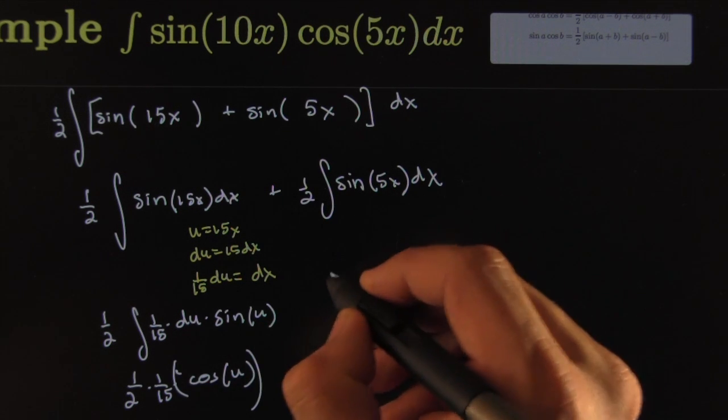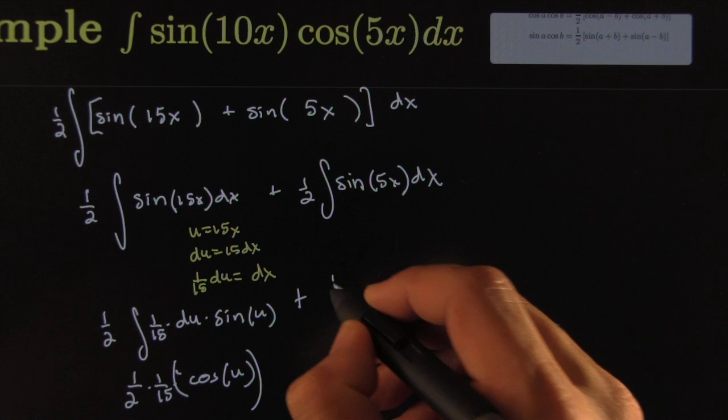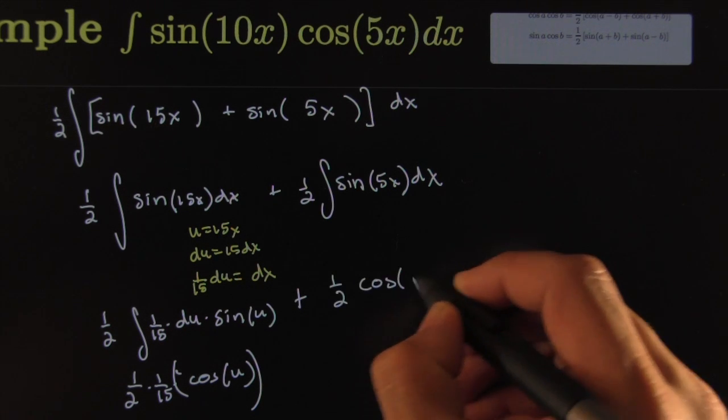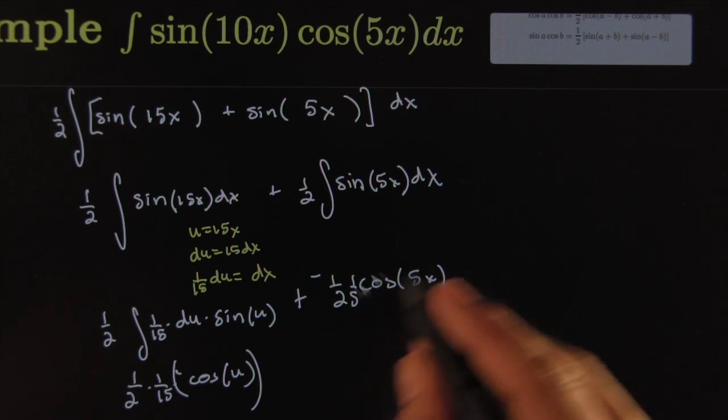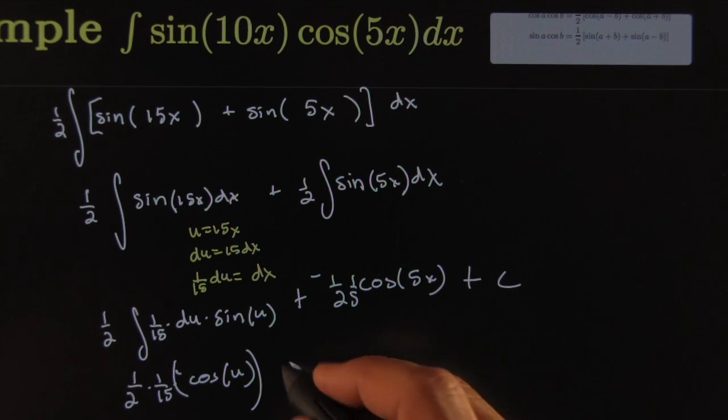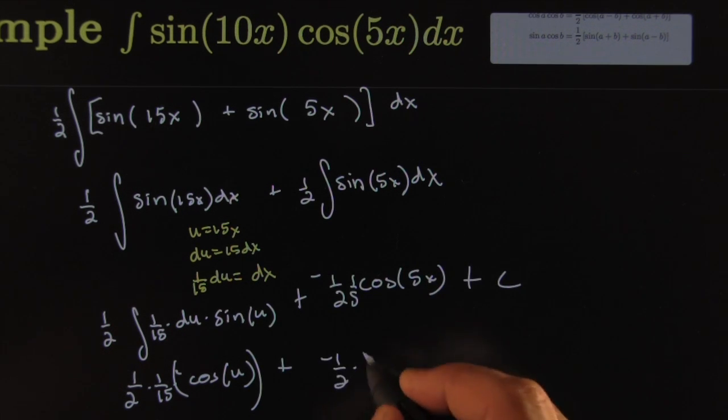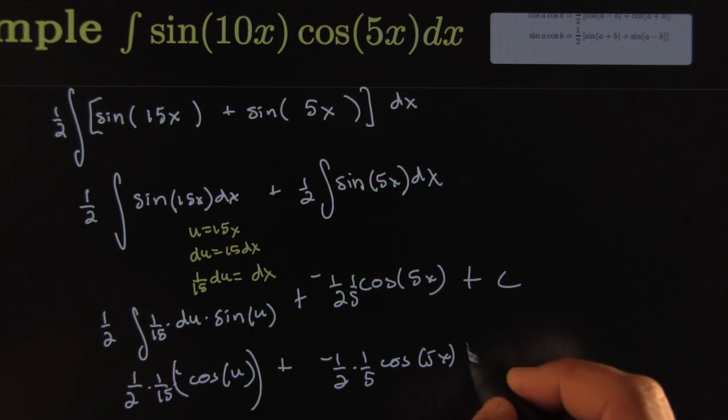Then here you'd have of course something similar. You'd have one-half cosine of 5x with a one-fifth and a negative, plus a constant. So this would be negative one-half times one-fifth cosine of 5x plus a constant.